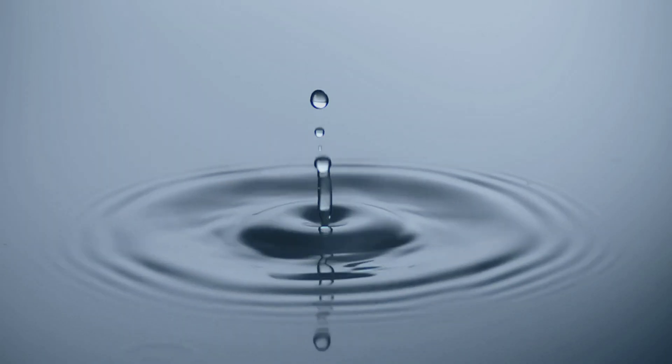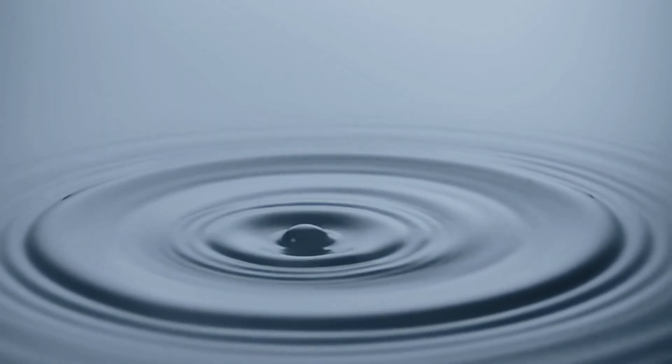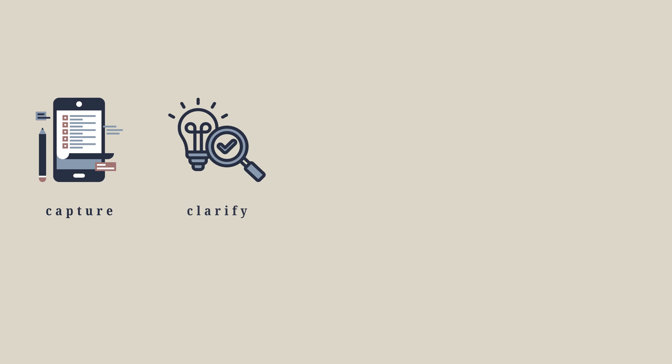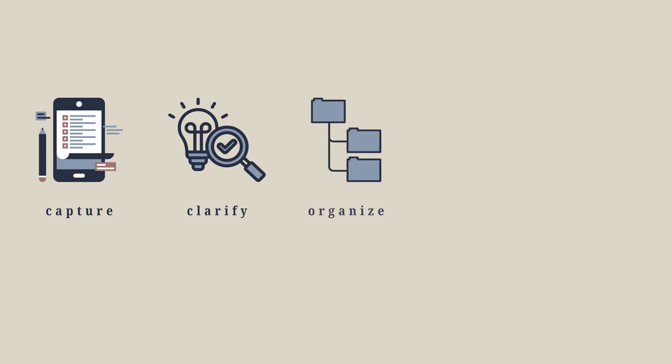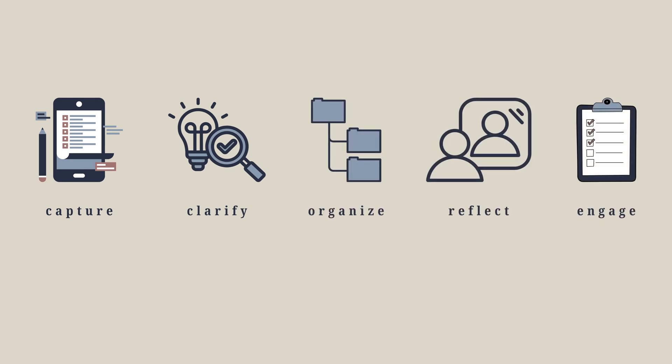Getting Things Done, or GTD, is a system developed by David Allen that aims to help you achieve stress-free productivity — a state where your mind is as calm and clear as water. The heart of GTD is a simple yet powerful 5-step workflow: Capture, Clarify, Organize, Reflect, and Engage.